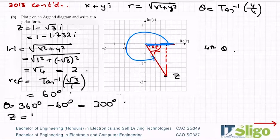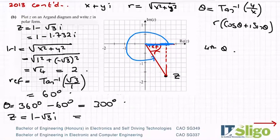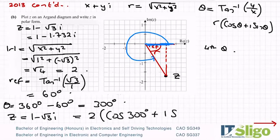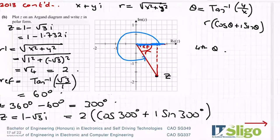So in polar form, then you write your complex number as r times cos theta plus i sine theta. I'm taking that from the log tables here. So write it as 2 times cos 300 degrees plus i sine 300 degrees. So that's it in polar form.